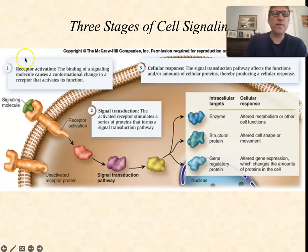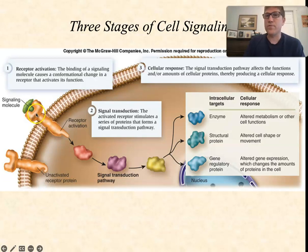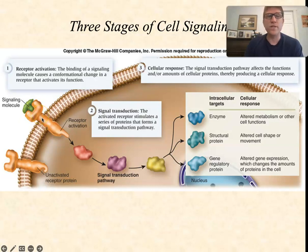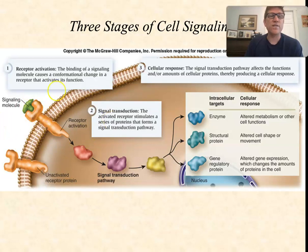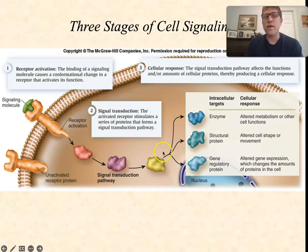Three stages of cell signaling begin with receptor activation. A signaling molecule binds to a receptor, causing the receptor's conformation — its shape — to change. That's a really important principle in cell, molecular, and biochemistry: when a protein binds to something, its shape inevitably changes, and that's usually what leads to either shutting it down or turning it on. In this case, the signal activates the receptor. In the next two videos, we'll look at how the activated receptor leads to some kind of signal transduction pathway, which then leads to some sort of a cellular response.